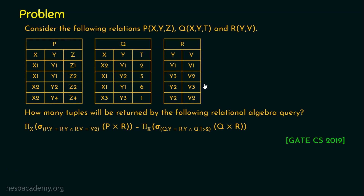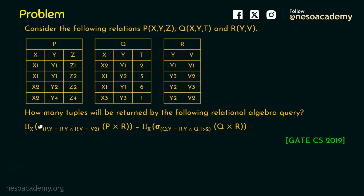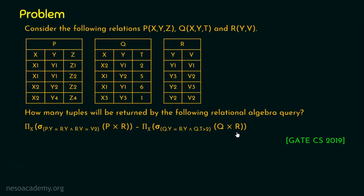What we are required to solve? How many tuples will be returned by the following relational algebra query? The query has a Cartesian product on the left-hand side. After doing the Cartesian product, there is a selection with a condition, and from that we are going to project the column x. On the right-hand side, the same kind of operation. The difference is on the left-hand side we have P cross R, whereas on the right-hand side we have Q cross R.